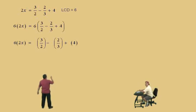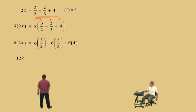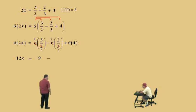We got to distribute the 6 to the 3 halves, and then the 6 to the 2 thirds, and don't forget the 6 to the 4. Everything has to be multiplied by a 6. Left-hand side, what's 6 times 2x? 12x. Now it's Kung Fu. 2 goes into 6, 3. And 3 times 3, 9. 3 goes into 6, 2. And 2 times 2, 4. Don't forget, 6 times 4, 24.